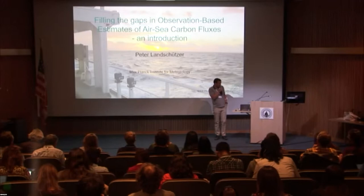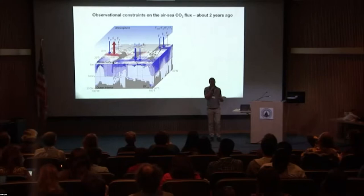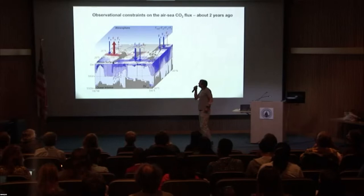We're now in our third year of the working group — pretty much two years into it. When we started about two years ago, we entered a period of enormous richness when it comes to knowledge about air-sea CO2 fluxes. Here's a little schematic showing three layers: the atmosphere, the surface ocean, and the interior ocean.